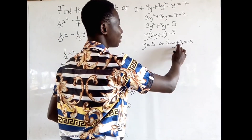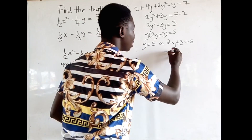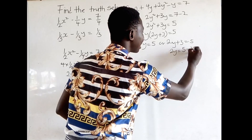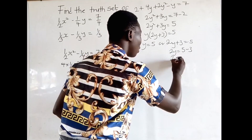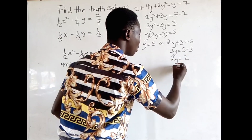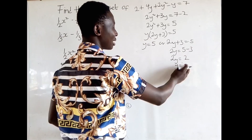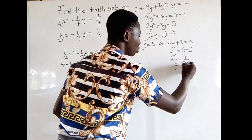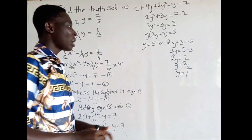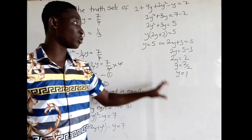Solving 2y plus 3 is equal to 5: we get 2y is equal to 5 minus 3, so 2y is equal to 2, and dividing by 2 gives y is equal to 1. So we now have two values for y: y is equal to 5 or y is equal to 1.